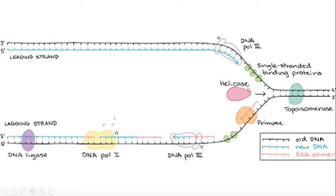Jab termination hogi, lagging strand jo discontinuously chhote chhote fragments mein bani hai — har ek piece ko Okazaki fragment kehte hain. DNA Polymerase 3 yeh strand banata ja raha hai, lekin isko 3 prime end primer provide karega. Aakhir mein DNA Polymerase 1 primer ko nikal raha hai aur uski jagah DNA nucleotide add kar leta hai. Ligase enzyme Okazaki fragments ko jodhta hai.